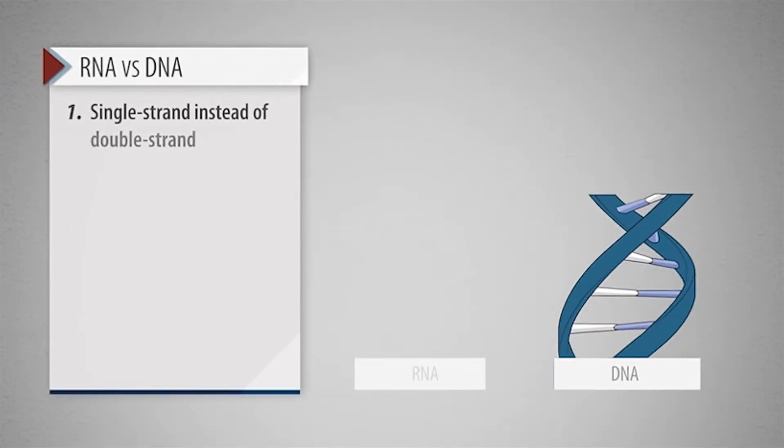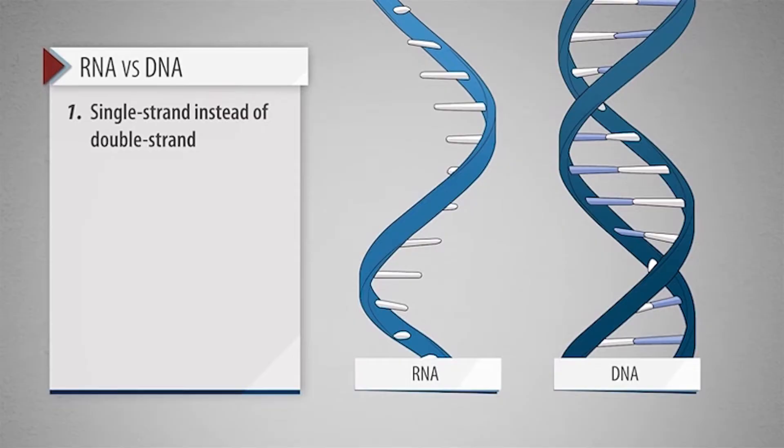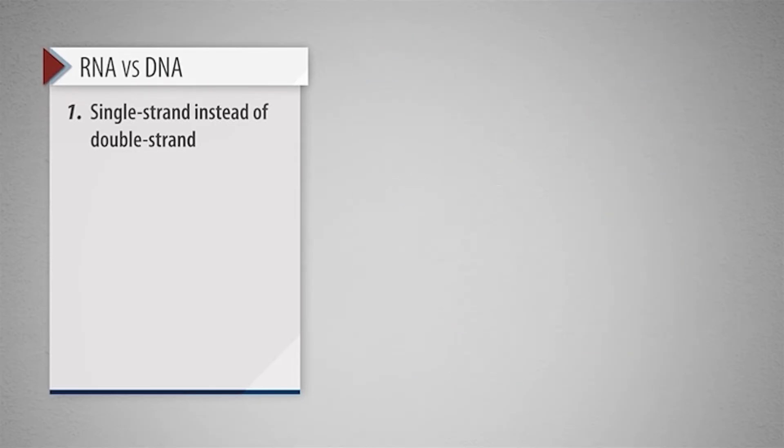RNA is a single-strand nucleic acid which, while more unstable than DNA, allows flexibility to bend back on itself, forming weak bonds with another part of the same molecule.